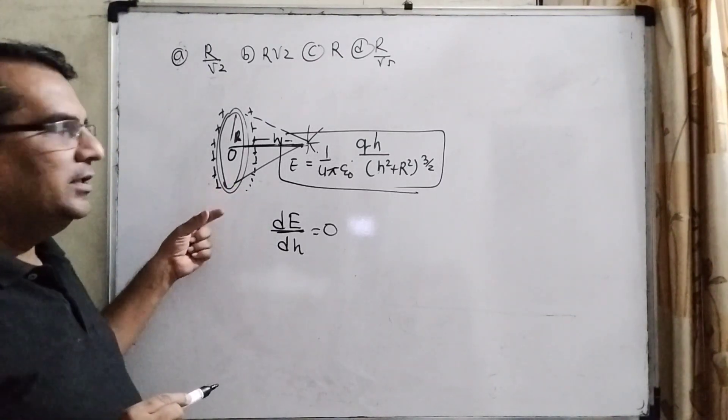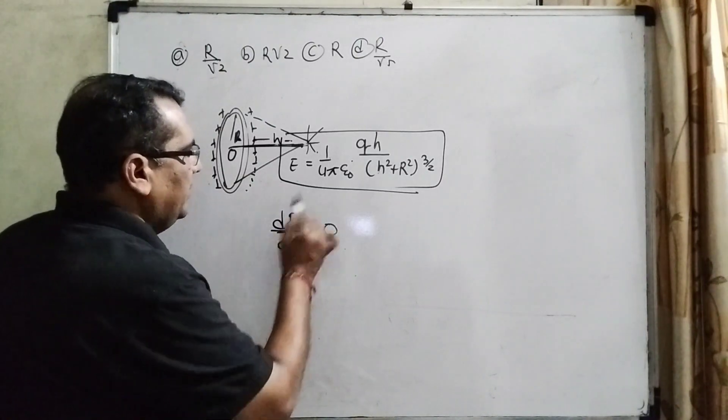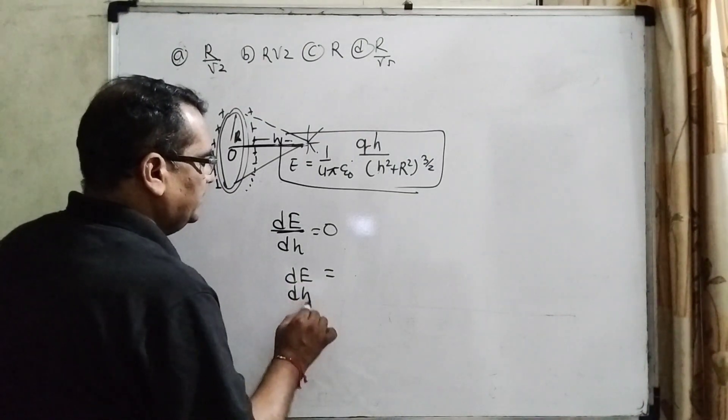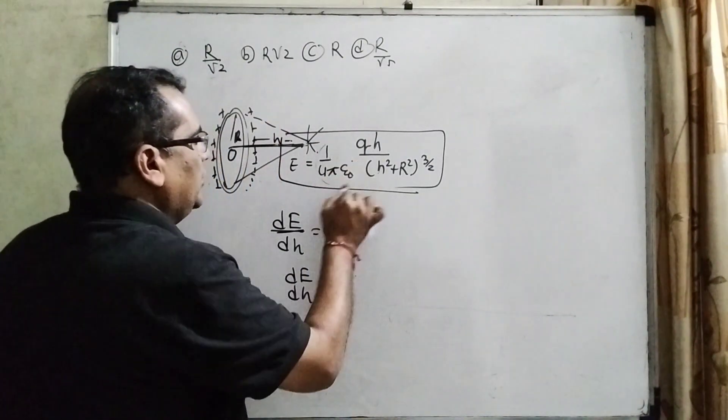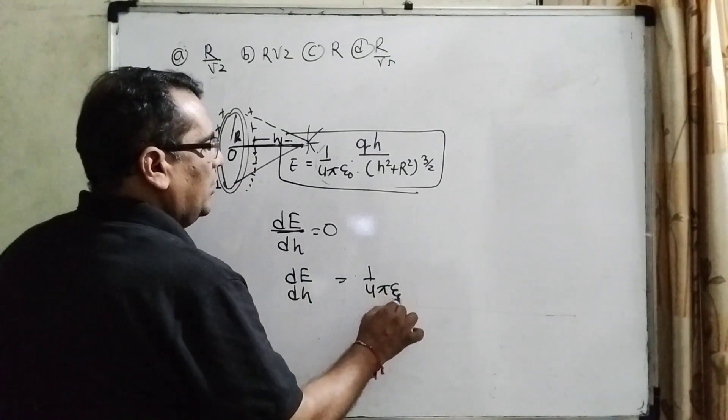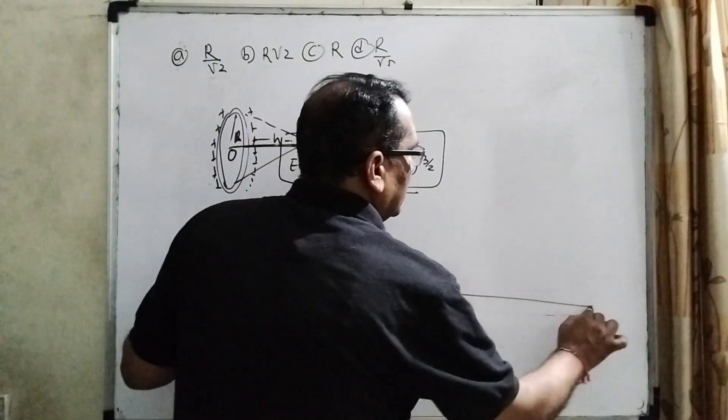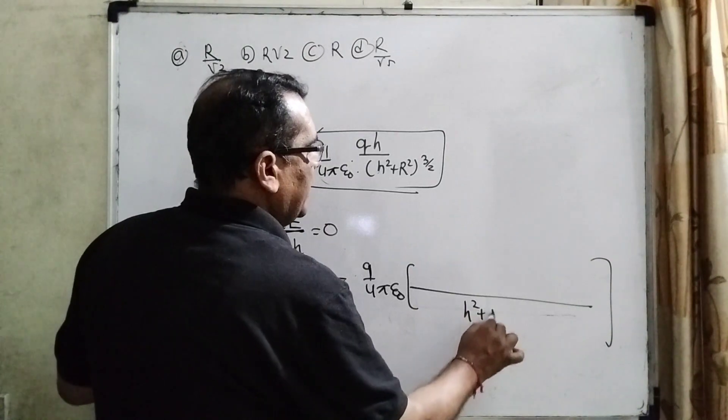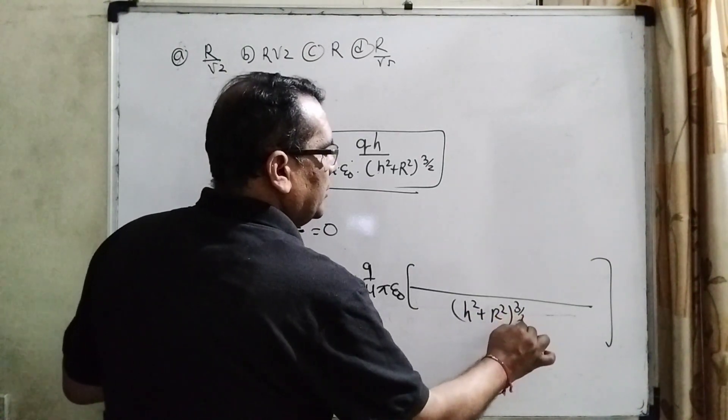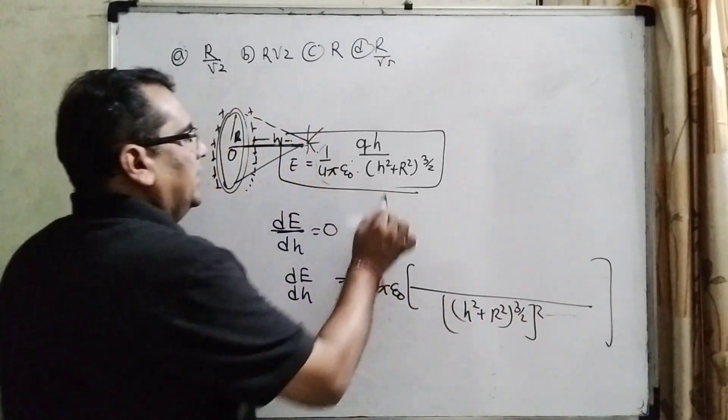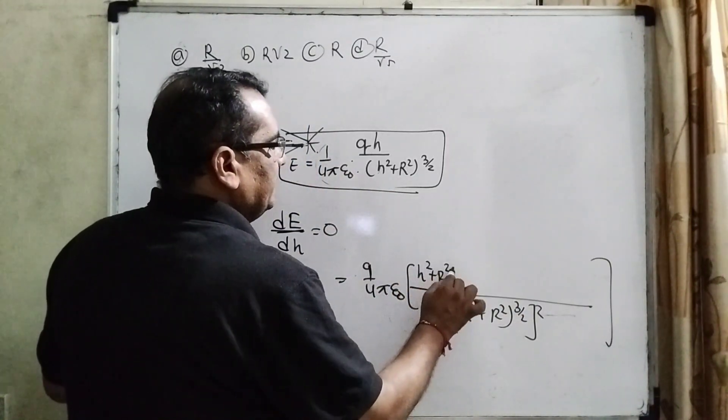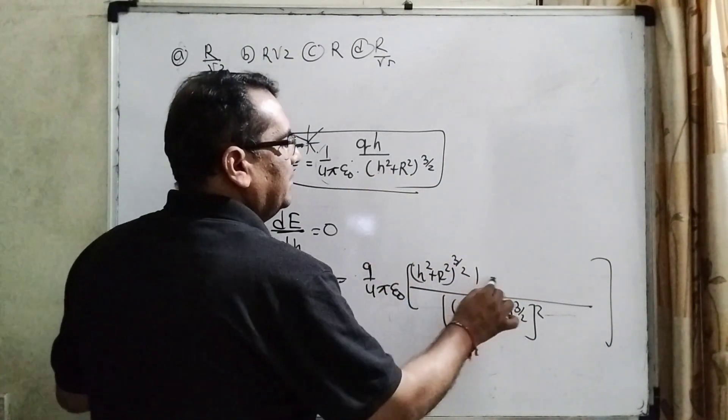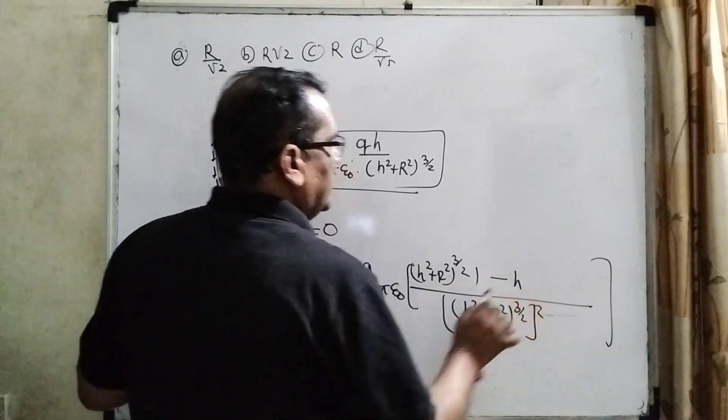So therefore, this is the key point and we have to differentiate with respect to h on both sides. And you can see that dE/dh. This value 1 over 4π epsilon_0 and q becomes common because it is a constant term. And denominator squared: (h² + R²) raised to power 3/2 and whole squared. Then denominator put as it is.